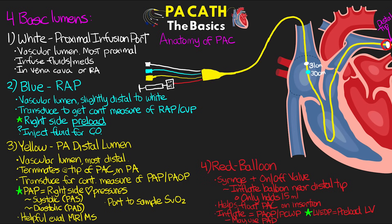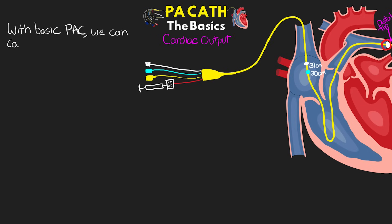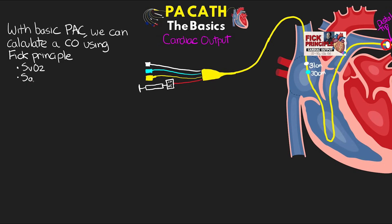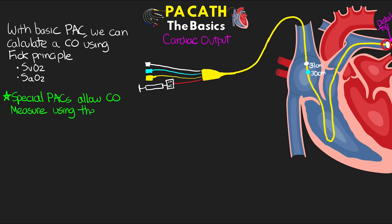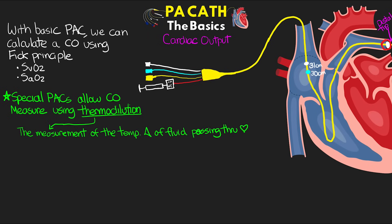With those four lumens we get a lot of useful information, but we're still missing an important value needed to calculate many more measurements: cardiac output. With a basic PA catheter, cardiac output can be calculated using the Fick principle by obtaining an SvO2 and an SaO2 from an ABG. Specialty PACs allow cardiac output via thermodilution — measuring the temperature change of fluid as it passes through the heart. This requires a thermistor that records real-time temperature in the pulmonary artery, and also provides a core temperature reading.